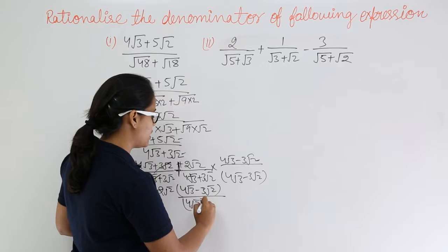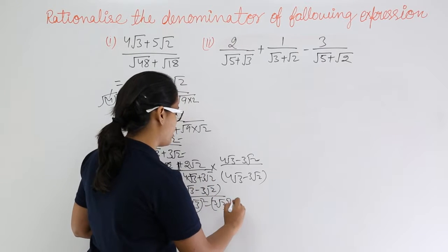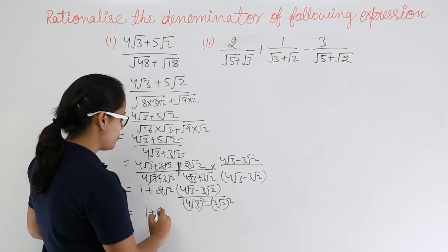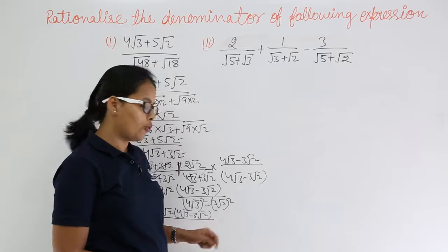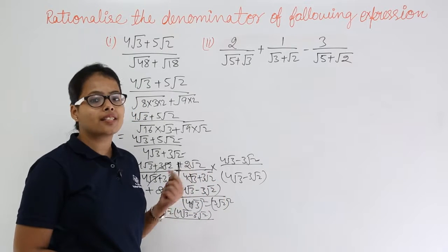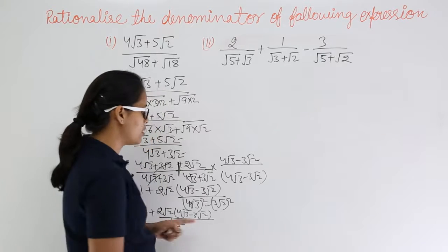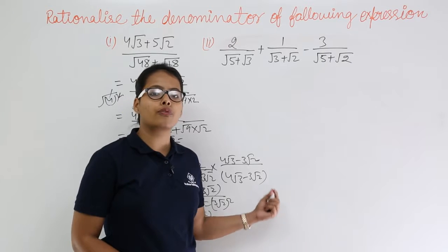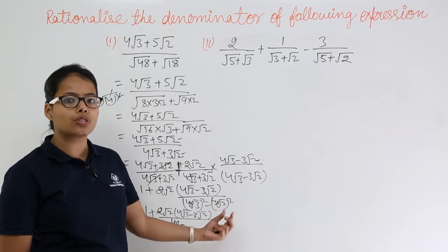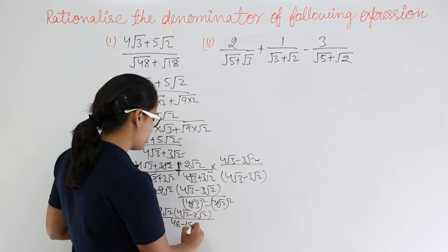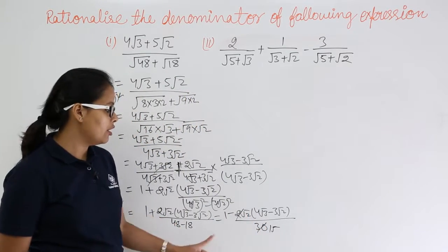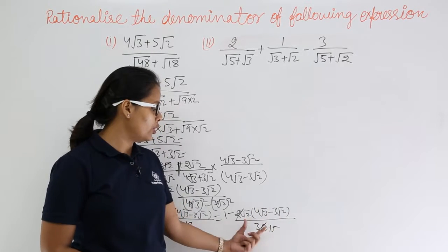Take the square of value a and take the square of value b. After solving further, in the denominator: take the square of 4 and the square of √3 separately — 4² is 16 and (√3)² is 3, so 16 × 3 = 48. Minus: take the square of 3 and the square of √2 — 3² × (√2)² = 9 × 2 = 18. So 48 − 18 = 30. The answer simplifies and you get (4√3 − 3√2) divided by 30.